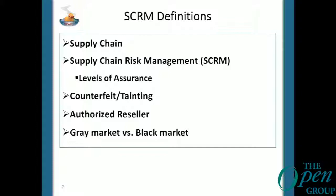Authorized reseller, in SUP terms, simply means the OEM — the company that actually makes the product — recognizes you as a legitimate reseller and would consider any sale to a U.S. government entity a legitimate, supportable sale. Gray market refers to unintended, unauthorized channels; black market is totally outside the bounds of any normal distribution channel.